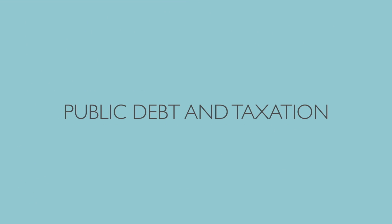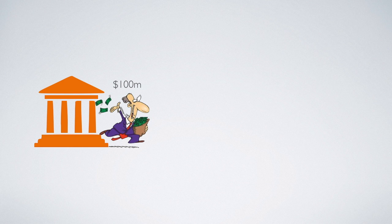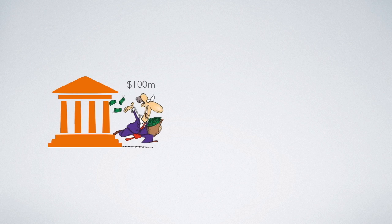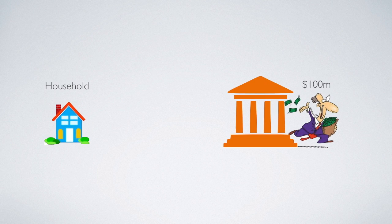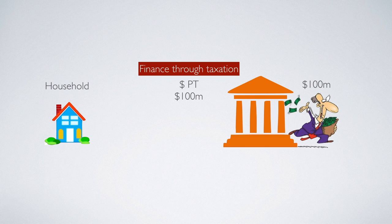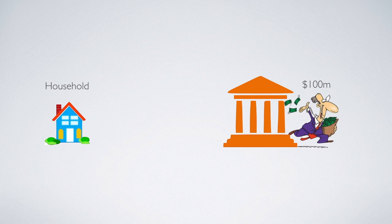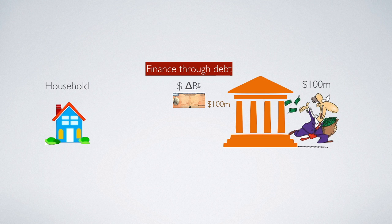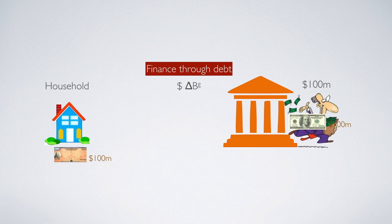Now we are going to learn the relationship between public debt and taxation. Whenever government decides to spend money — for example, one million dollars — then it must take some resources in order to spend, and usually the resources come from the household. So either government can tax the household 100 million immediately so that government can have the money to spend, or government can choose to finance the purchase of 100 million through public debt, meaning government is going to issue 100 million dollars worth of public debt to the household, so that the household buys the debt and lends government 100 million.